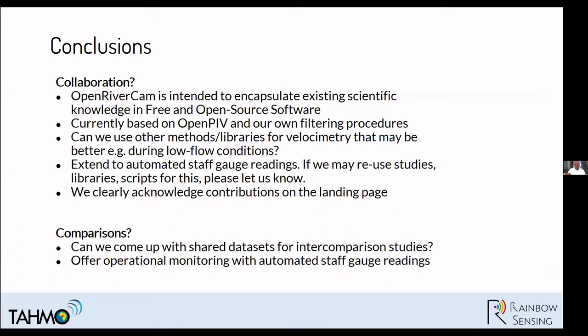We don't want to reinvent the wheel — we really want to build on existing scientific findings and libraries that are freely available, since we're using open software. We've built some filters, but there are probably other filters we can still use to improve the methodology. We're also looking at how to automate the staff gauge readings, since currently somebody has to manually record or estimate the gauge reading and enter it during image processing. We think there are ways to do this automatically. If others want to use our datasets, we can share the videos for comparison and to help build on the method.